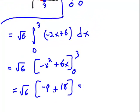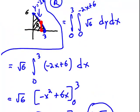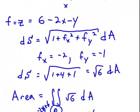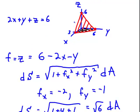which gets you square root of 6 on the outside, negative 9 plus 18 inside the brackets. Or, let's see, 9 times radical 6. 9 times radical 6 is our answer. It represents the area of the plane in the first octant, so the area that I pictured in red here.